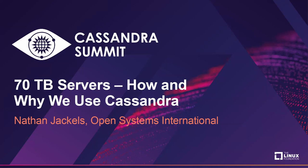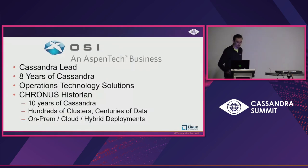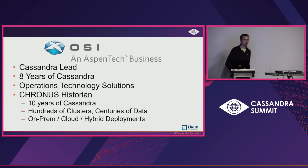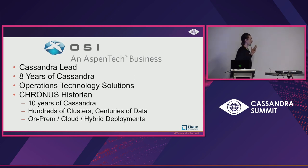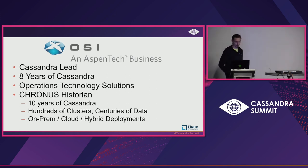I'm Nathan Jekylls and I'm a principal developer at OSI and we run big clusters. I've been with OSI for eight years using Cassandra in our historian product. We work on operations technology solutions — utility, electric, gas, water, transportation networks, manufacturing, kind of anything that has a control system. Cassandra is an excellent time series database and we've been using that as part of our historian product for the last 10 years and I think it's been pretty successful.